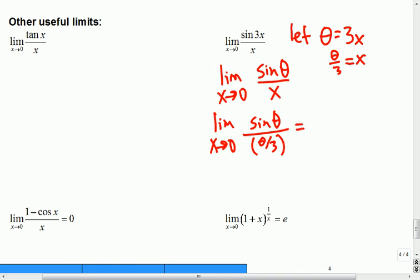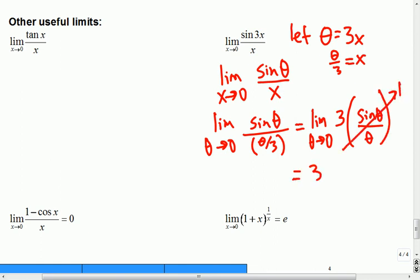And I'd like to do this all in terms of thetas. So that means theta over 3 equals x. Now we're talking about theta. So this would be the limit as theta goes to 0 of 3 times the sine theta over theta. And we know this one is a 1. So the limit would be 3 times 1, which is 3.